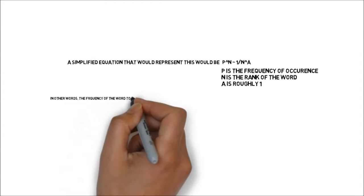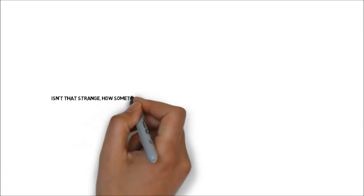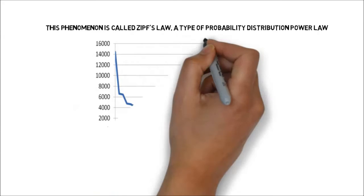In other words, the frequency of a word times the rank of that word is roughly equal to 1 divided by the rank to the power of roughly 1. Isn't it strange how something as complex as language can be explained with a simplified equation? This phenomenon is called Zipf's Law — a type of probability distribution power law.